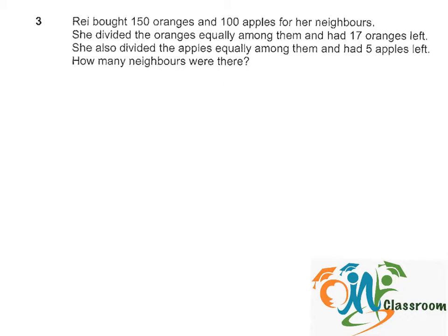So first of all, we need to find out how many oranges and apples did she give her neighbors. So for oranges, it will be 150 minus 17 equals to 133. For apples, 100 minus 5 equals to 95.